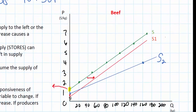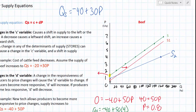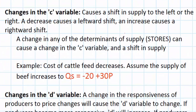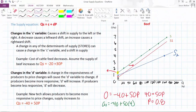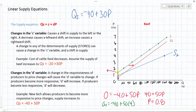A change in the c variable will cause a shift horizontally of the supply curve, either outwards or inwards, depending on whether the c variable increases or decreases. A change in the d variable, however, will cause the supply curve to pivot and become either steeper or flatter. An increase in the d variable represents an increase in the responsiveness of producers to price changes, which would cause supply to increase and become flatter. A decrease in the d variable would mean producers are less responsive, and the supply curve would decrease and become steeper.